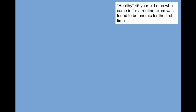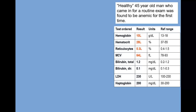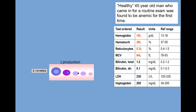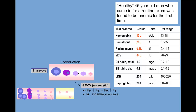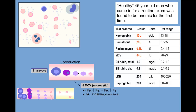An apparently healthy 45-year-old man comes in for a routine exam. His results show a low hemoglobin and hematocrit and a low reticulocyte count — a decreased production anemia. His MCV is low, a microcytic anemia. Since he has been generally well and not previously anemic, the most likely diagnosis is iron deficiency. In this case, it is caused by a previously undiagnosed colon cancer that's been bleeding a little for a long time. His smear shows the relatively large area of central pallor in his small red cells.